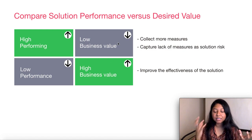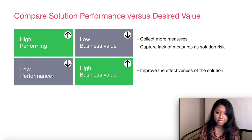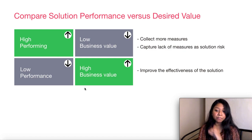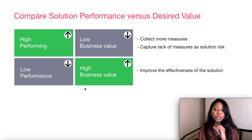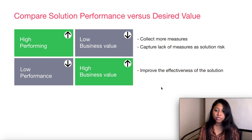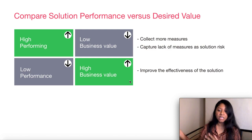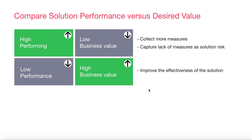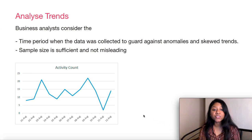The second scenario is where a solution has low performance but is providing high business value. For example, you might implement a process that is not very effective, yet it is still providing business value. In those cases, you would want to improve the effectiveness of that process or solution so that the business value can be improved further.